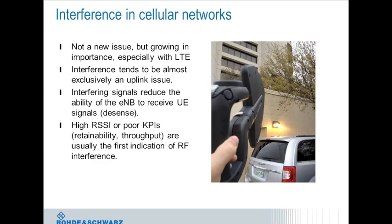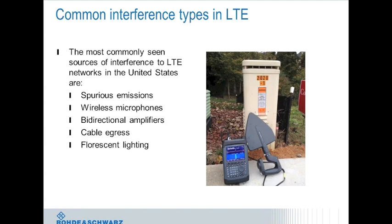Interference hunting in cellular networks is almost exclusively an uplink issue — that is, in the spectrum used by mobiles communicating with the base station. While interference to the LTE downlink is possible, it's relatively rare and difficult to detect. Interference in the uplink impairs the base station's ability to hear weak signals from UEs. The good news is that base stations can detect uplink interference through indicators like excessively high RSSI or poor KPIs such as throughput or call retainability.